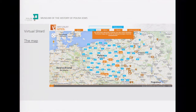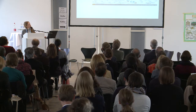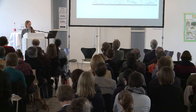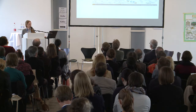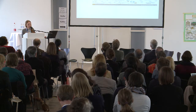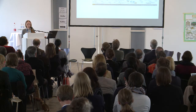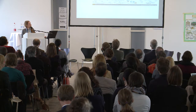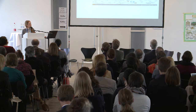There are approximately 2,500 towns already profiled on Virtual Sztetl. However, due to extensive editorial work on the portal's content currently underway, only 1,889 locations are currently available online. Looking at the map, you can see that the history of Jews in Poland is the history of Jews residing in the territory of the pre-war Polish-Lithuanian Commonwealth, covering the area of today's Ukraine, Lithuania, and Belarus.